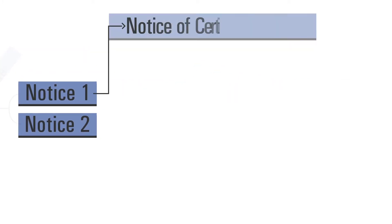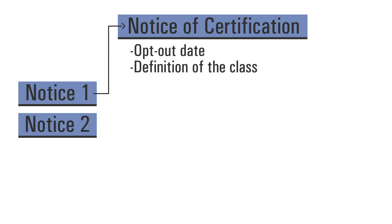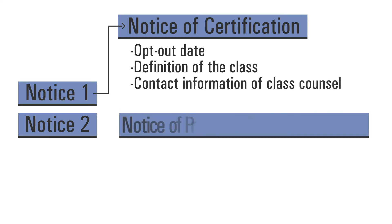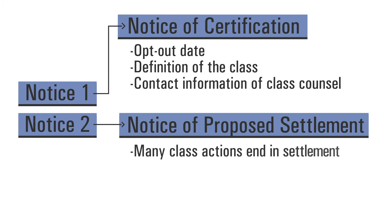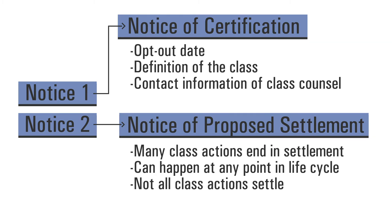The first notice is a notice of certification, which includes information like the opt-out date, the definition of the class, and the contact information of class counsel. The second notice is sent when a settlement is reached. Many class actions end in a settlement. A settlement can happen at any point in the life cycle of the case, but not all class actions settle.